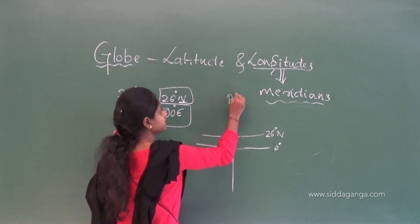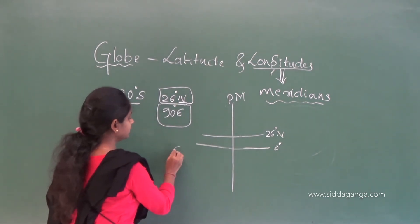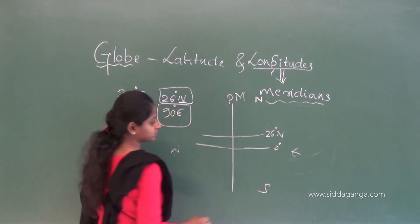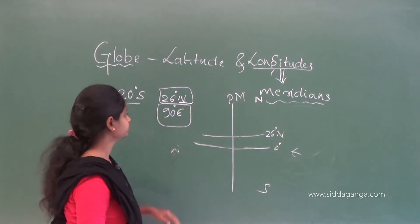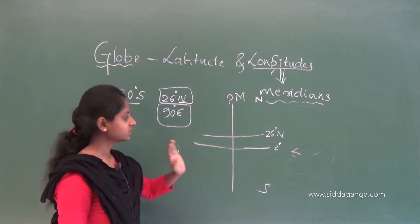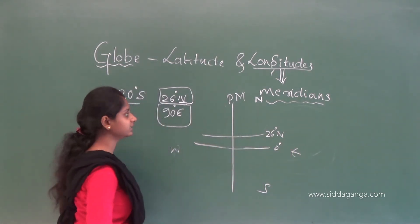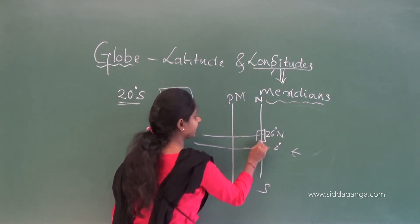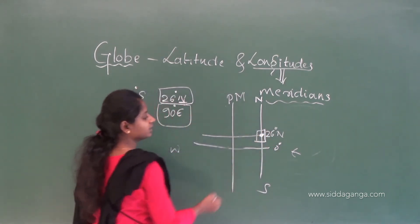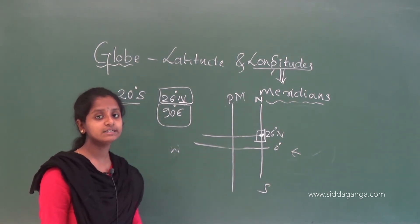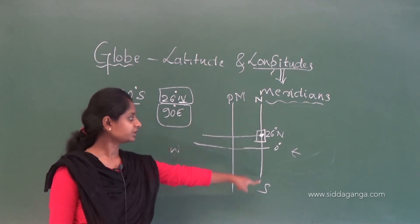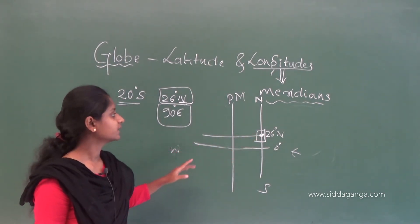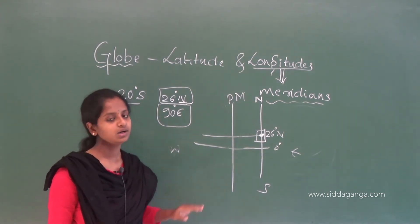East of the prime meridian is the east side, west is the west side. For 90 degrees east, we go to the east side and find 90 degrees. This is the exact place of Dubri — where both the longitude and the latitude intersect. Like this, we can locate any place on the Earth's surface.